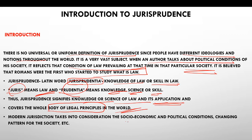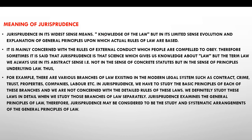Now, what will we say? The meaning of jurisprudence is knowledge of law. In the exam, you must write that jurisprudence means knowledge of law. But in the limited sense, it refers to the general principles upon which actual rules are based, depending on the social, economic, and political conditions of society. It is mainly concerned with rules of external conduct which people are compelled to obey — rules made by the government and society that people must follow. We study jurisprudence to understand that law and gain knowledge and skill in it. Law is always used in the abstract sense.